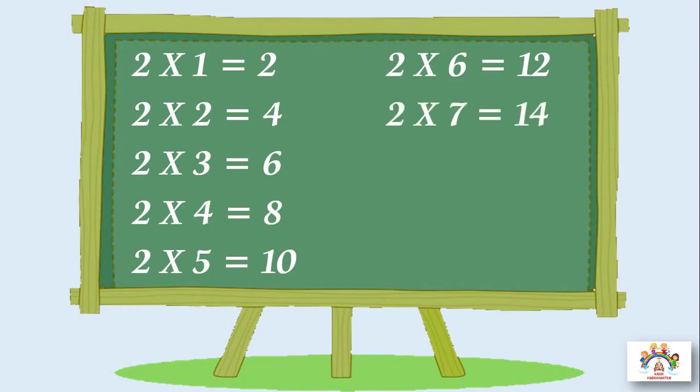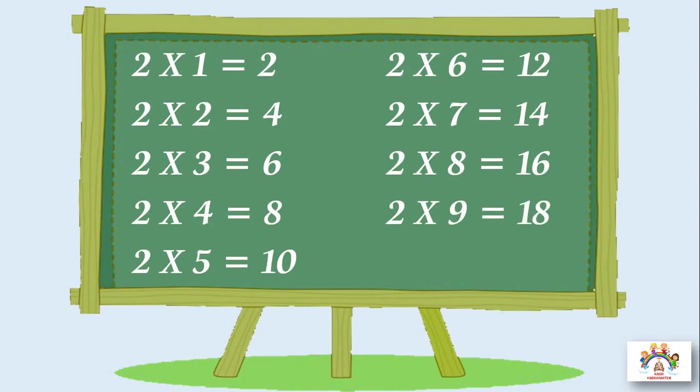Two sevens are fourteen, two sevens are fourteen. Two eights are sixteen, two eights are sixteen. Two nines are eighteen, two nines are eighteen. Two tens are twenty, two tens are twenty.